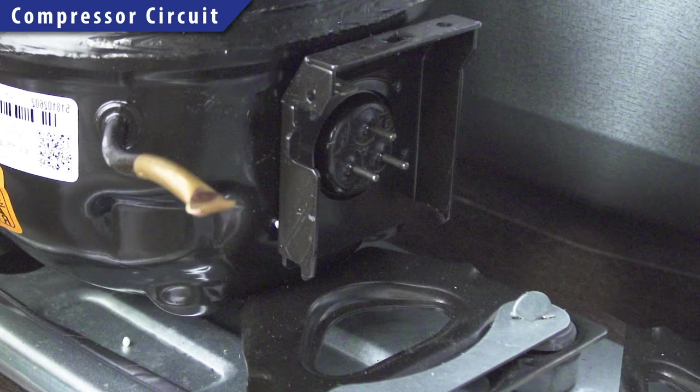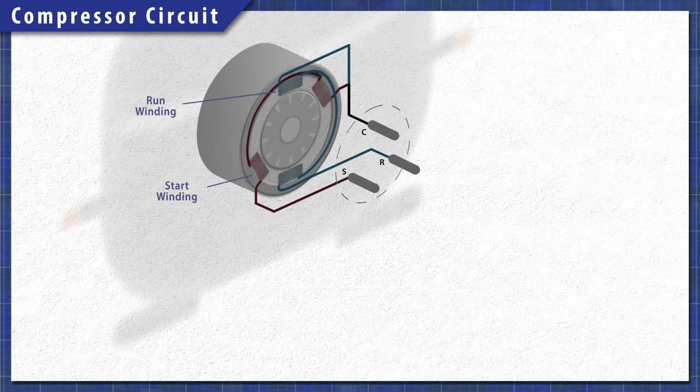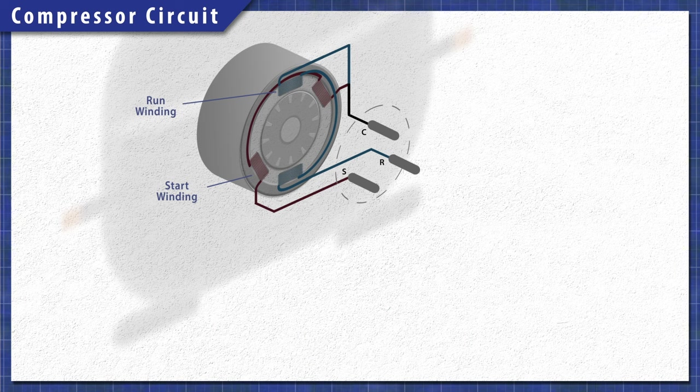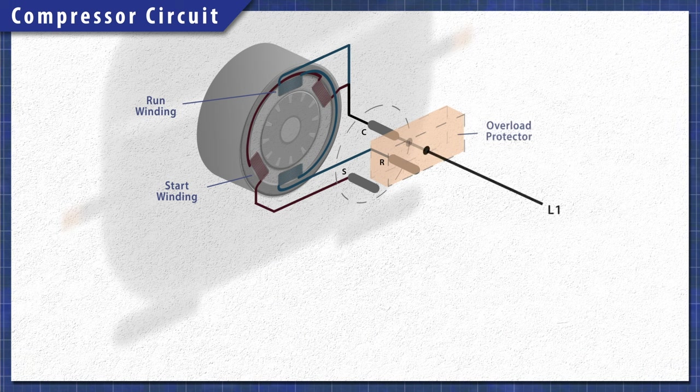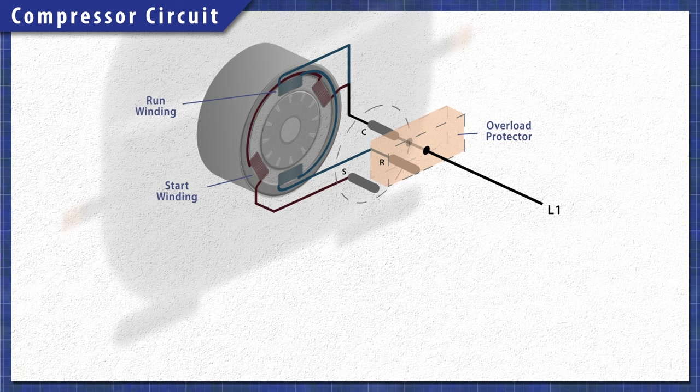The compressor uses a single phase motor. It has a start winding and a run winding, which are both connected to a common terminal. Attached is an overload protector that disconnects power if the current or temperature gets too high.